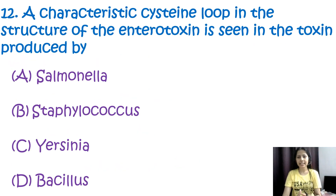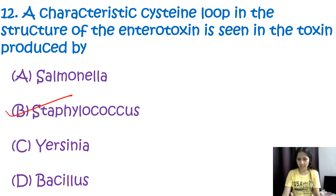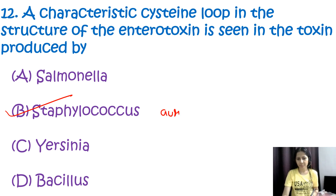Question number twelve: a characteristic cysteine loop in the structure of the enterotoxin is seen in the toxins produced by — options are Salmonella, Staphylococcus, Yersinia, or Bacillus. The correct option is B, Staphylococcus. Staphylococcus produces an enterotoxin that contains a characteristic cysteine loop in its structure. This enterotoxin is responsible for causing symptoms of Staphylococcus aureus food poisoning.